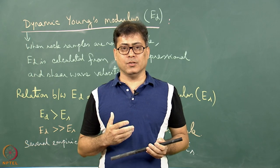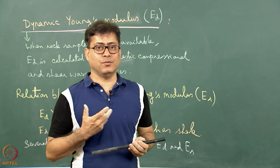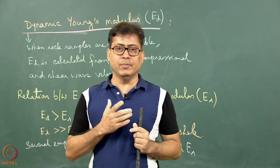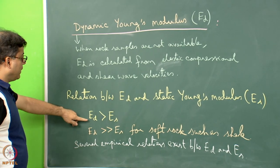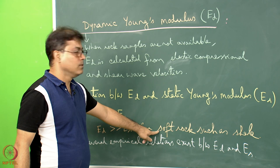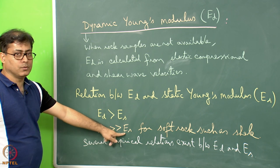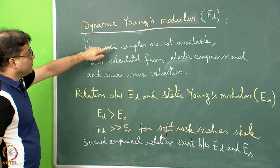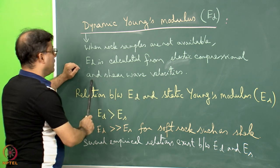The dynamic Young's modulus is calculated from acoustic data where actual rock samples are not available. Several empirical relationships exist between static and dynamic Young's modulus, but generally the dynamic Young's modulus is more than the static Young's modulus. For soft rocks such as shale, the dynamic Young's modulus can be much larger than the static Young's modulus. When rock samples are not available, the dynamic Young's modulus ED is calculated using elastic compressional and shear wave velocities.